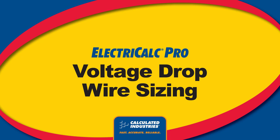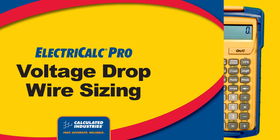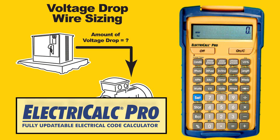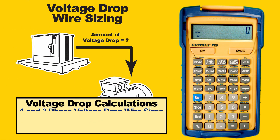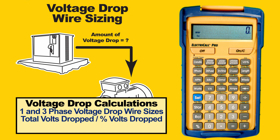In this video, we will demonstrate how to use your ElectriCalc Pro to calculate voltage drop solutions. It will provide fast one-phase or three-phase voltage drop wire sizes, total volts dropped, and percentage volts dropped. Or it can give you the maximum length for any wire size given a load and voltage drop limitation.